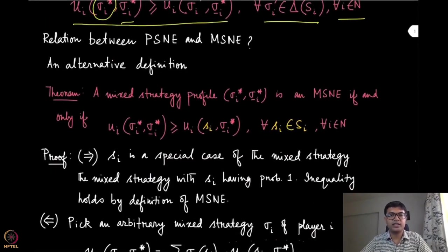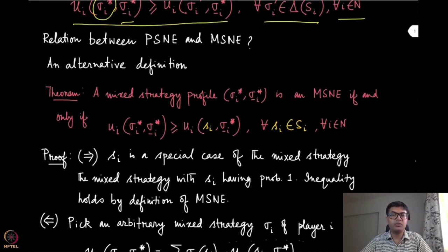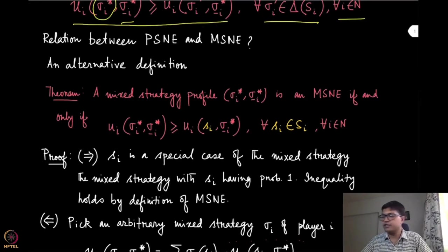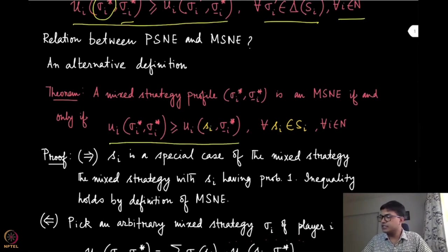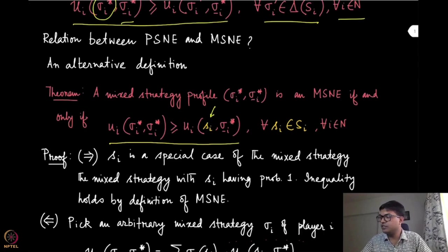The next result we are going to give essentially establishes an alternative definition for mixed strategy Nash equilibrium. Oftentimes this alternative definition will be more appropriate and easier to use for certain proofs. So let us first state that result formally: a mixed strategy profile sigma i star, sigma minus i star is a mixed strategy Nash equilibrium if and only if — this is a necessary and sufficient condition — you write the same inequality, but instead of the strategy of player i being a mixed strategy as in the original definition, it is now a pure strategy.